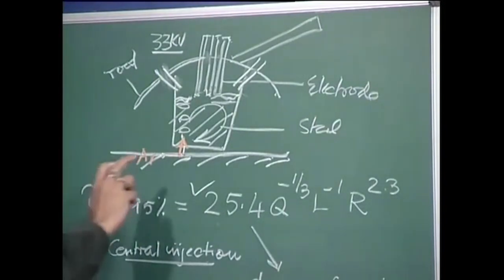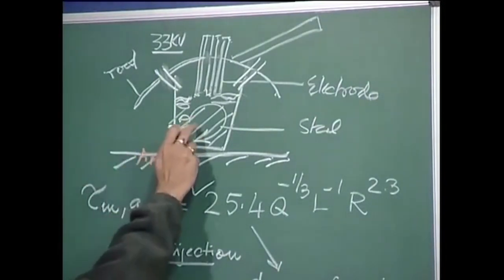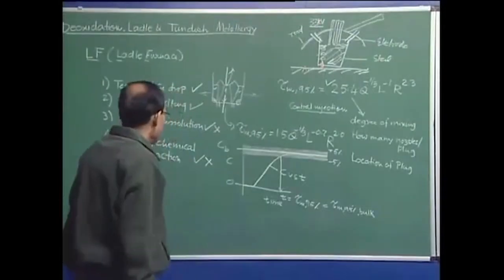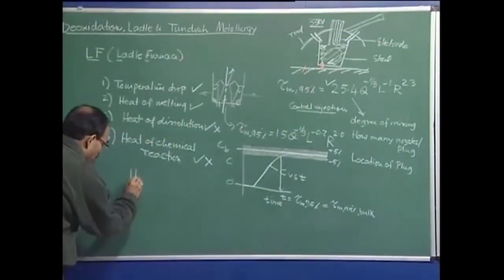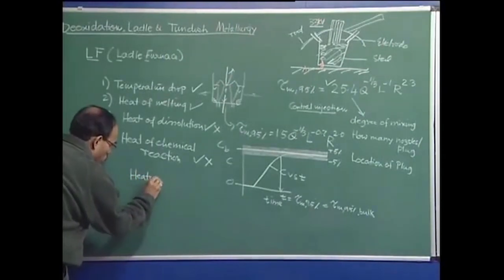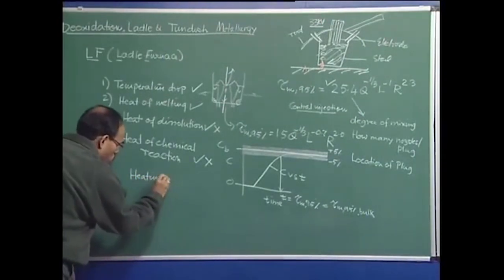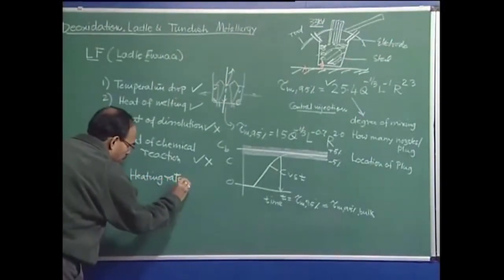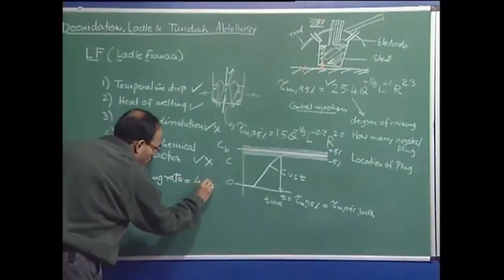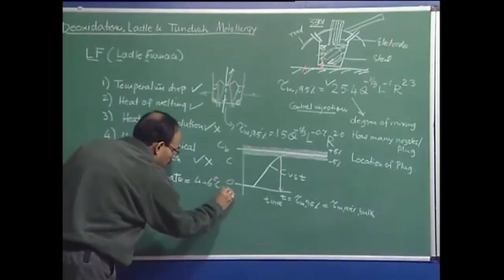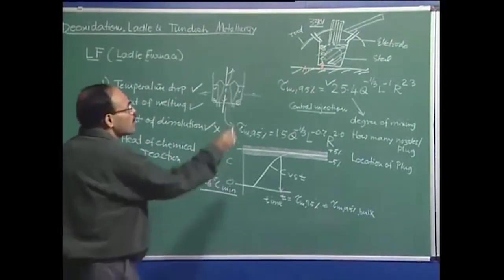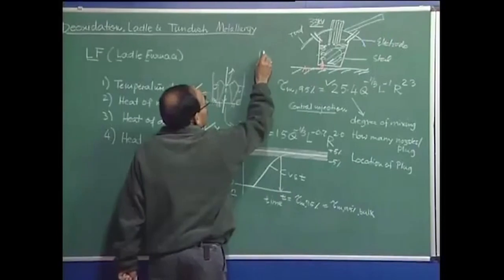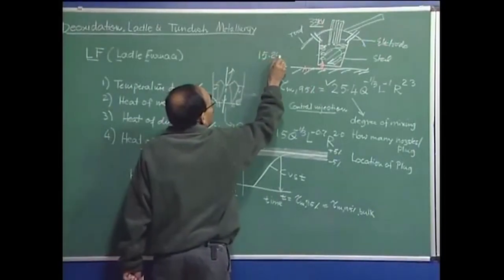When heat is supplied by converting the ladle into a ladle furnace, the heating rate for a typical rating is about 4 to 6°C per minute. The ladle treatment duration is in the range of 15 to 25 minutes.